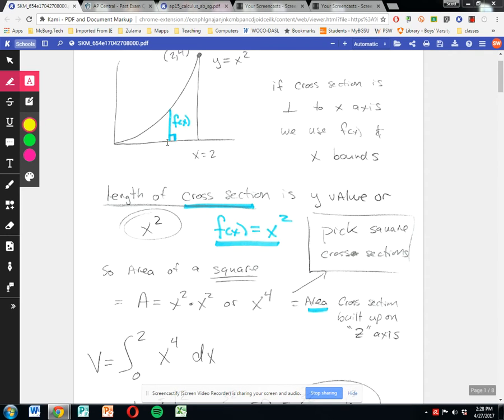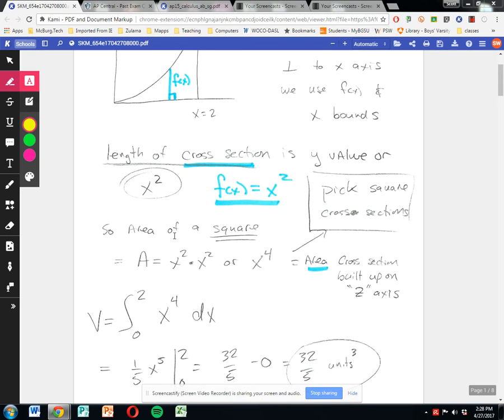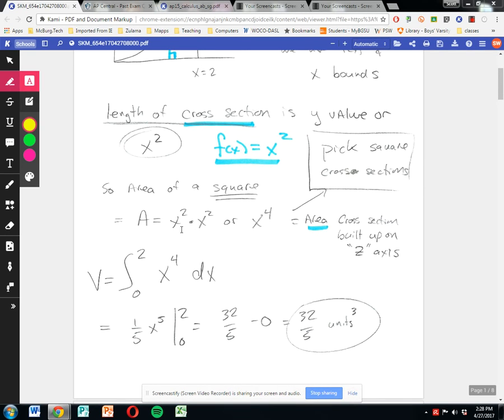So think of this as the bottom of the square, and then the top of the square would literally come off the paper. So it is going to be an x-squared by x-squared square coming straight out at us. And I know that's hard to think of, but build this straight up towards the user here. So the area of that square would be x-squared times x-squared, or x-to-the-fourth. This is the area of the cross-section.